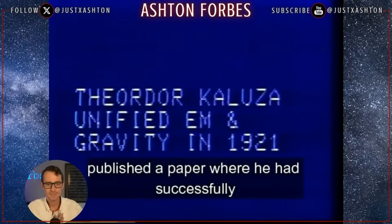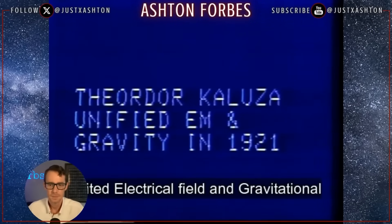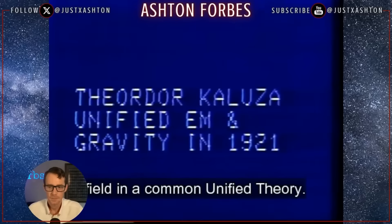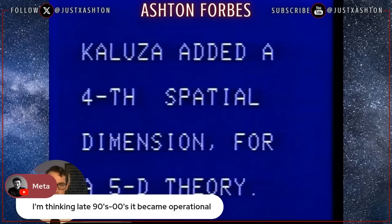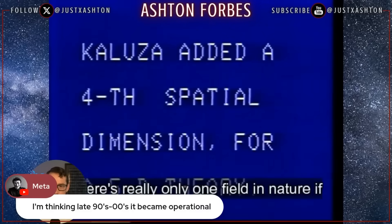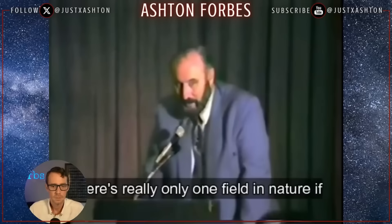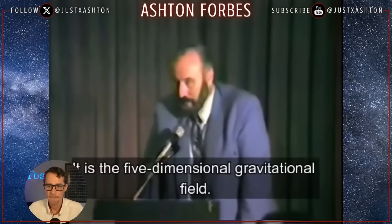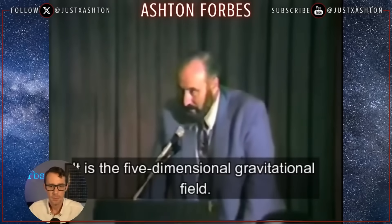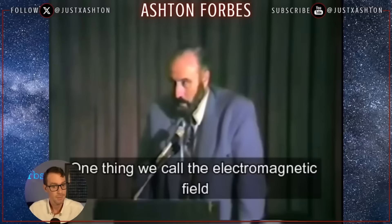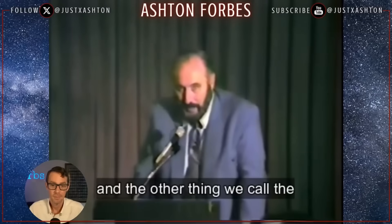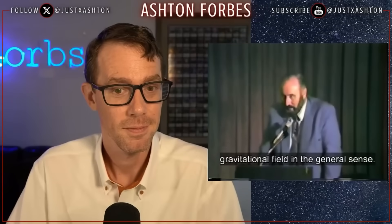He published a paper where he had successfully united the electrical field and the gravitational field in a common unified theory. To do that, he had to add another physical dimension, and a very strange thing emerged. There's really only one field in nature if you're looking at that hyperspace — it is the five-dimensional gravitational field. And it intersects our world in two things: one thing we call the electromagnetic field, and the other thing we call the gravitational field in the general sense — general relativity, the ability to curve and warp space-time itself.